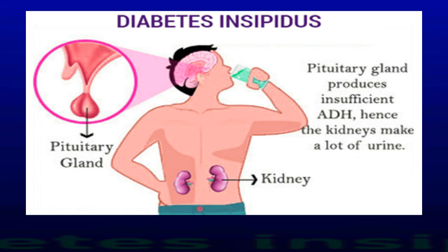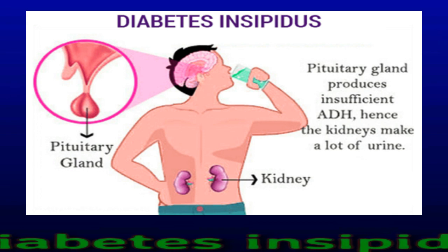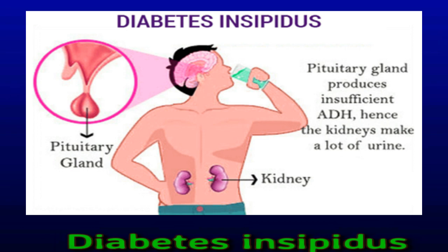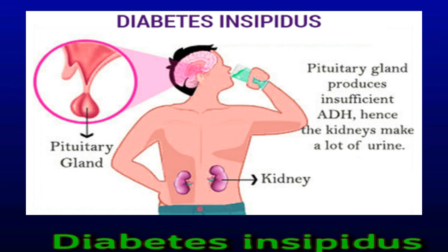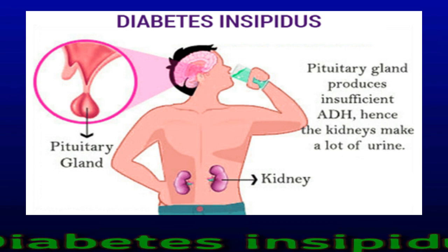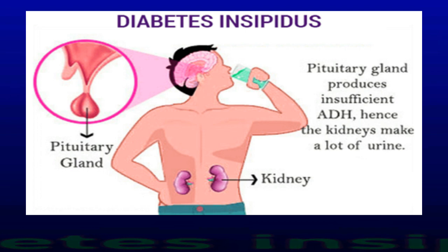Diabetes Insipidus is a rare condition that causes excess urine production. It occurs due to the pituitary gland not producing enough vasopressin, or antidiuretic hormone (ADH), which helps maintain the correct amount of water in the body. Symptoms include needing to urinate frequently during the day and night, passing large quantities of light-colored urine, feeling excessive thirst, and drinking lots of fluids. Without management, diabetes insipidus may lead to dehydration. Treatment options may include medications to stimulate the effects of vasopressin.